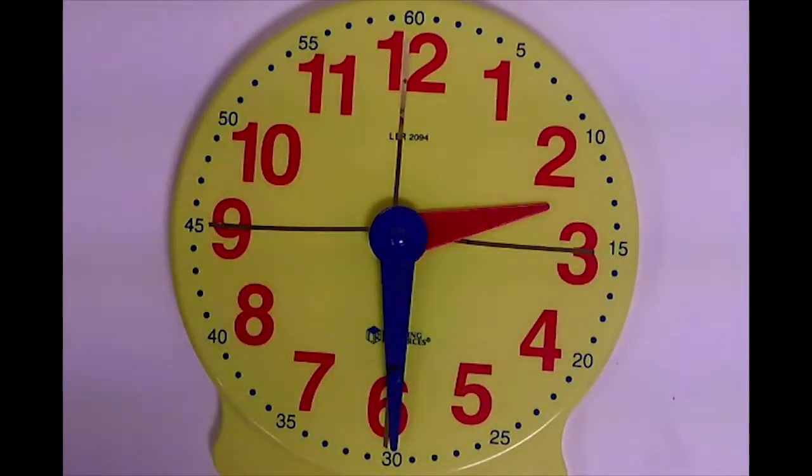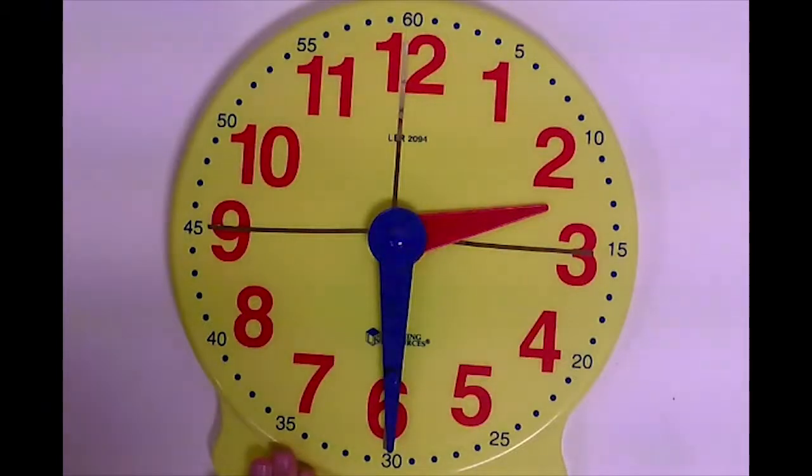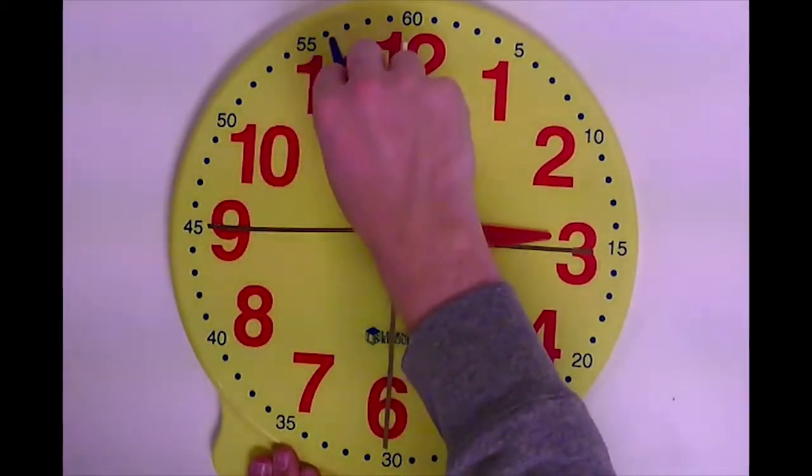So when you're dealing with elapsed time, you always want to work with hours first, well for the most part anyway. So the first problem we had was it started at 2:30, which is what it looks like now, and then it ended at 4:30. So we're gonna start by counting by hours until we get to 4:30.